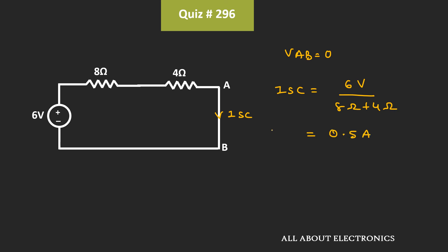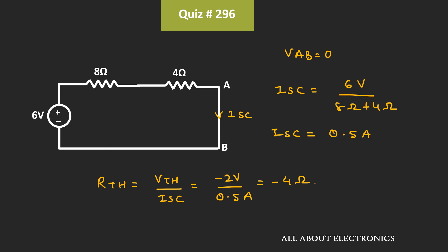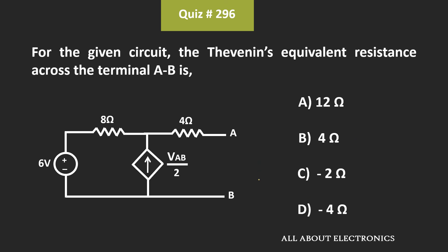The short circuit current is 0.5 ampere. The Thevenin's equivalent resistance, Rth = Vth divided by Isc = minus 2V divided by 0.5 ampere, equals minus 4 ohm. For the given circuit, the Thevenin's equivalent resistance is minus 4 ohm, and hence D is the correct answer.